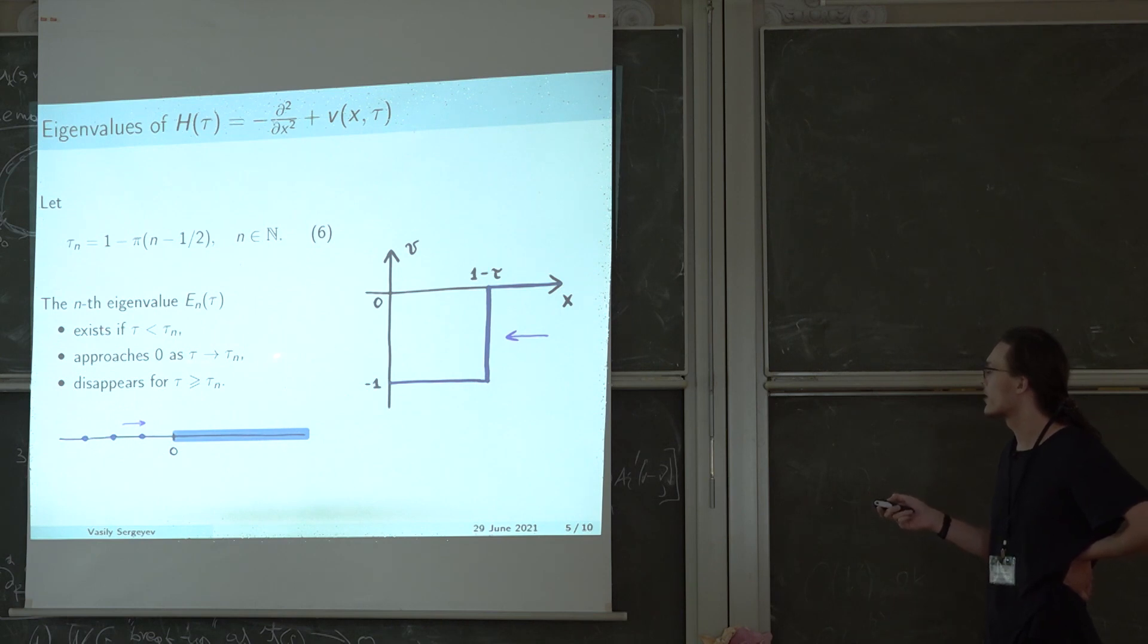As tau approaches tau n, the nth eigenvalue approaches the edge of the continuous spectrum and it disappears for tau greater than or equal to tau n. Having understood that, let's finally talk about the solutions of our problem that we study.